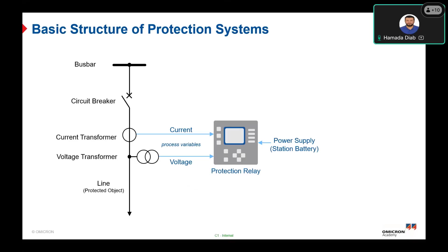The basic structure of the protection system includes the process variable detection or measurement, which can be done by the current and voltage transformers — CTs and VTs. We also have the process variable processing, which is done by the protection relay itself, and the control signal conversion, which is done by the circuit breaker. The circuit breaker is responsible for tripping the fault current if the power system is in a fault state.